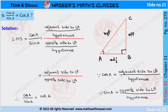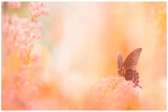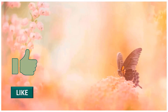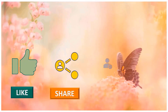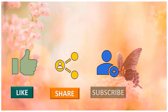We write it as adjacent side to angle A by hypotenuse, divided by opposite side to angle A by hypotenuse. Here the hypotenuse cancels, and we get adjacent side to angle A by opposite side to angle A. This is nothing but the definition of cot A. Therefore, cos A by sine A is equal to cot A. Please like, share, and subscribe to our channel for latest updates by pressing the bell icon.